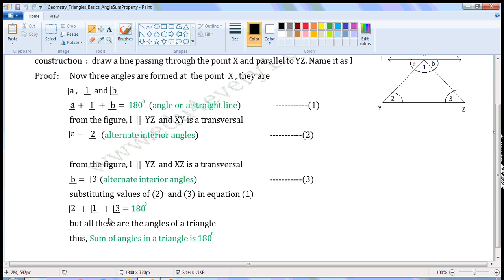But these three angles are the angles of a triangle, and their sum is 180 degrees. So, we can say that the sum of angles in a triangle is 180 degrees.